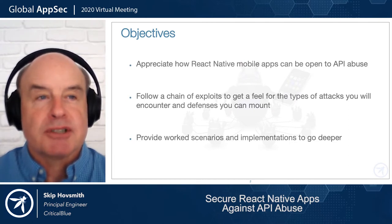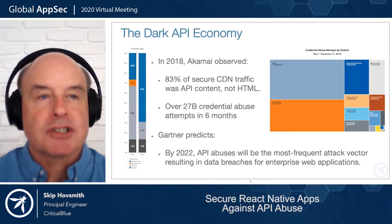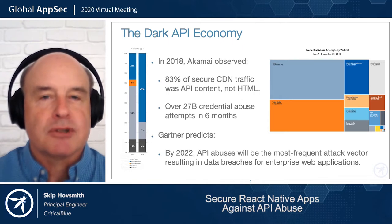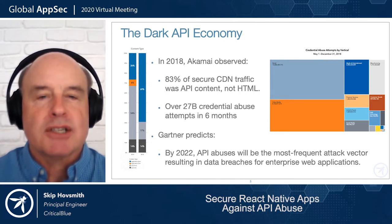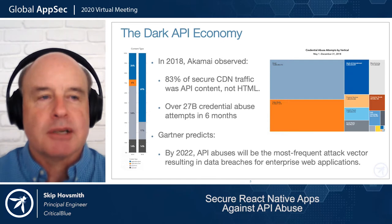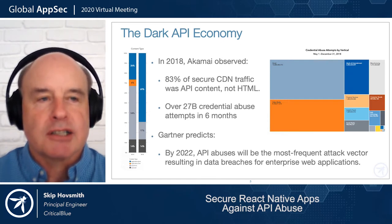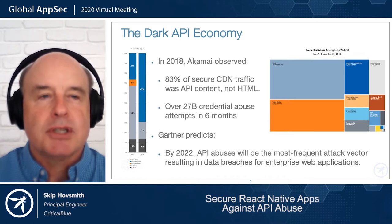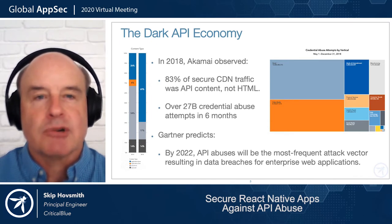APIs these days are everywhere. In 2018, Akamai did a study on their secure CDN traffic and looked back at similar traffic from 2014. Back then, API requests were less than 50% of traffic. By 2018, it was over 83%. During that same six-month period in 2018, over 27 billion credential abuse attempts occurred on just that one secure network.